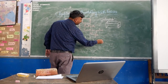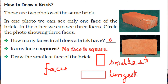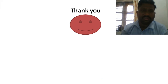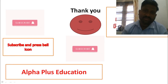No face of a brick is square. Draw the smallest face of the brick. If you have some shapes in your book, you can tell which is the shape of a brick and which is not. This is all about this video. I hope you like it — please hit the like button and subscribe to the channel if you have not subscribed till now. Thank you.